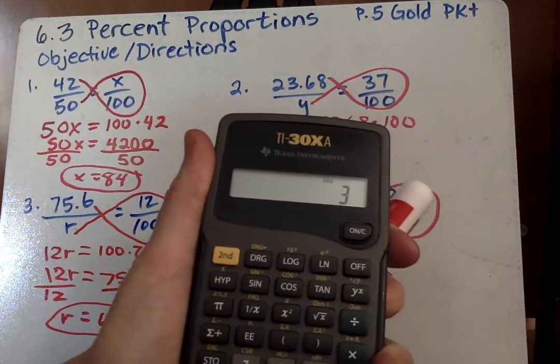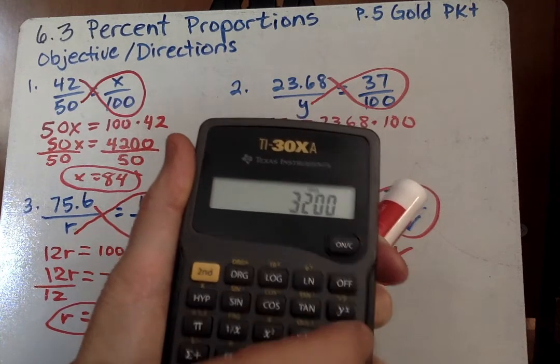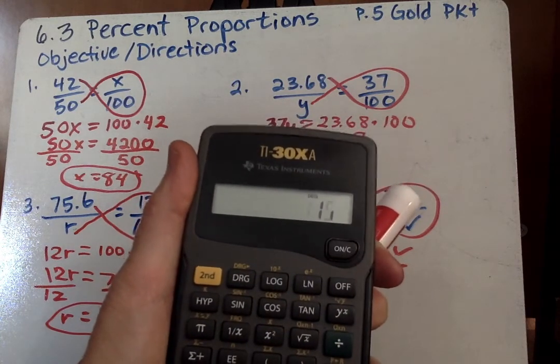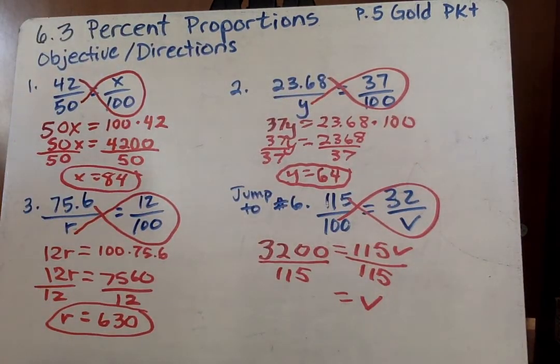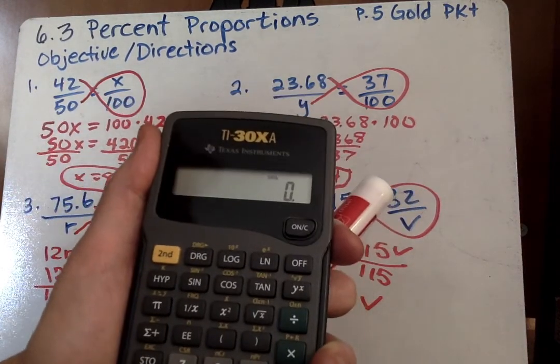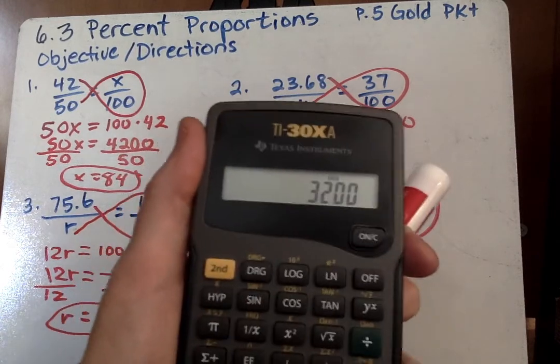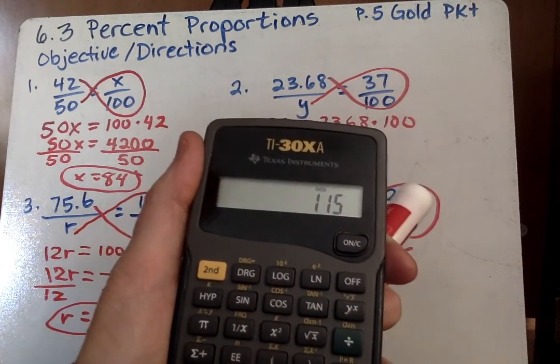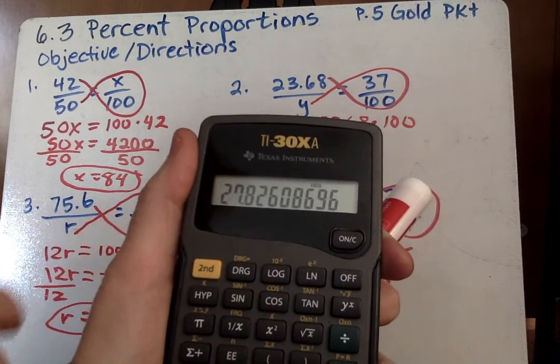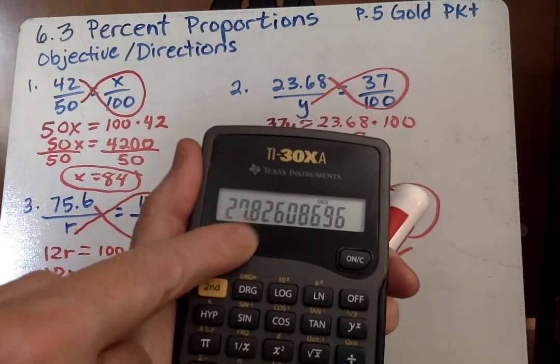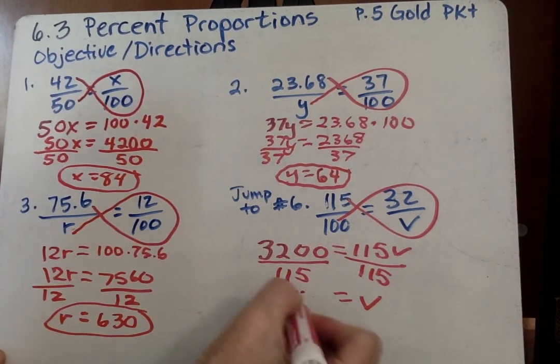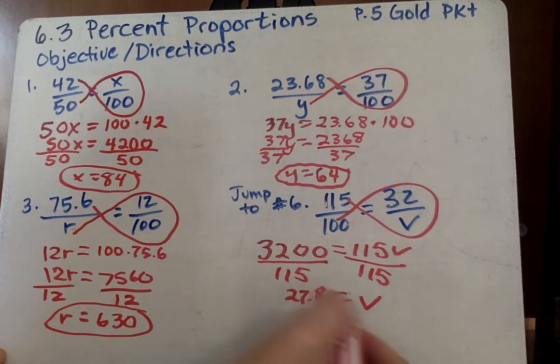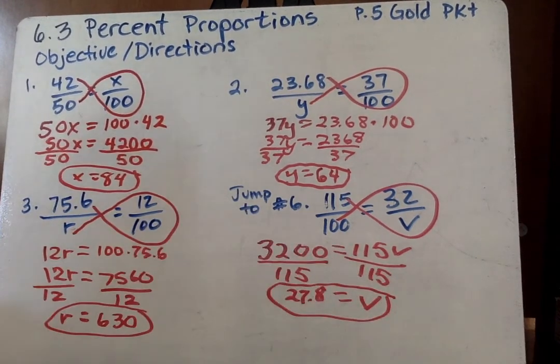So we can say V equals. So we put in 3200 divided by 115. Oh, is that correct? Did I make a mistake somewhere? 3200 and 115. Let me try that again. If you get a weird answer, I would try it a second time, making sure you put the numbers in correctly. Yep. I'm going to put 27.8 and round to the nearest tenth there. So it's 27.8.